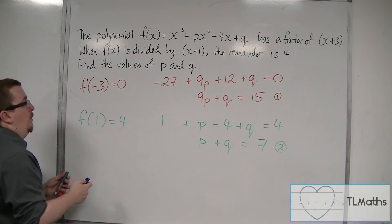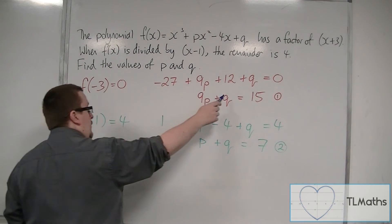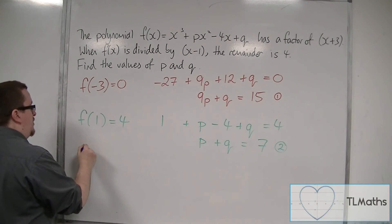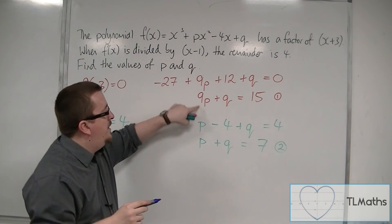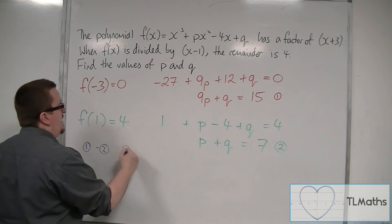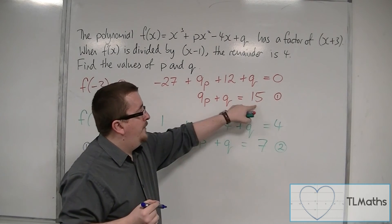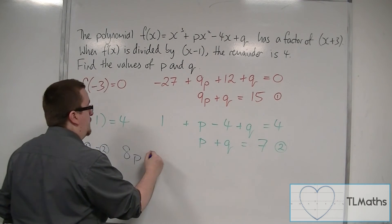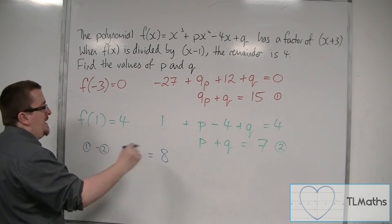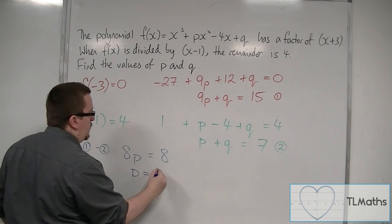So to find out what p and q are, I'm going to do equation 1 take away equation 2, and that will eliminate the q's. So I get 9p take away p is 8p, q take away q is 0, 15 take away 7 is 8. So 8p is equal to 8, and so p must be equal to 1.